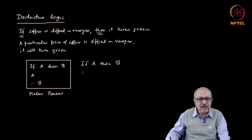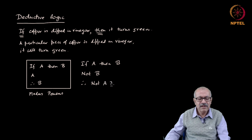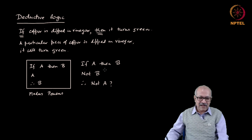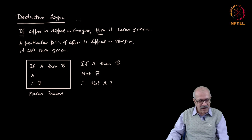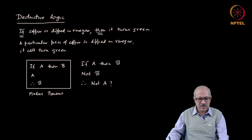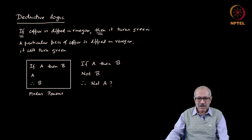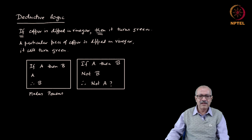Suppose you have a situation where we can say what has happened is not-B. Then can we say that A did not happen? Yes — not-B means it did not turn green. Had it been dipped in vinegar it would have turned green, and therefore you can conclude that it has not been dipped in vinegar. Therefore, if not-B is true, then not-A is a valid conclusion. This is a valid reasoning and it is called modus tollens.